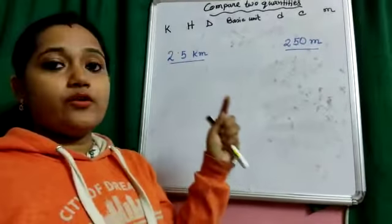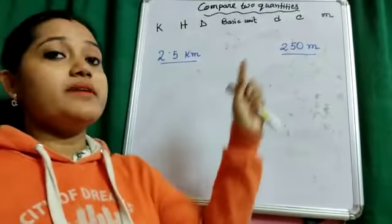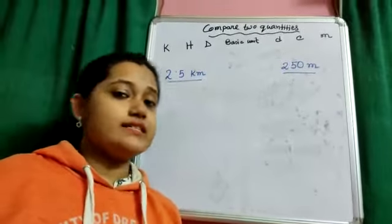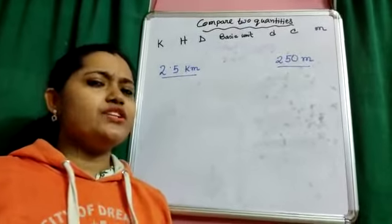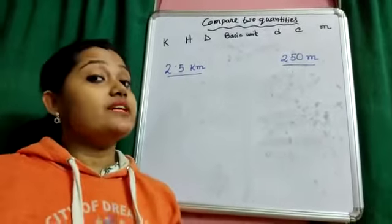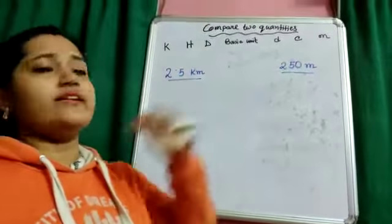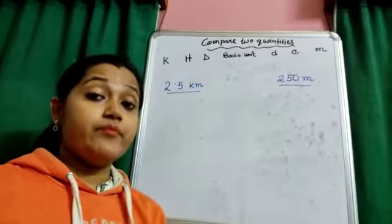2.5 kilometer is the amount of some length and 250 meter is the amount of some other length. So, let's check which one is longer, which one is bigger in value, 2.5 kilometer or 250 meter.